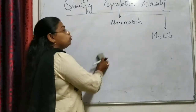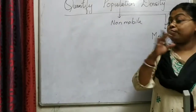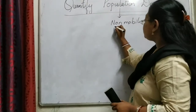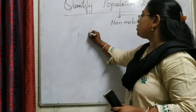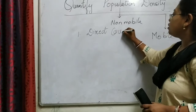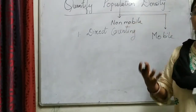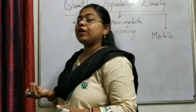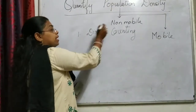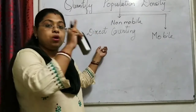Now if it is non-mobile, the first type of method to quantify is direct counting. If it is a very large-sized organism, such as a tree in a row, then it can be directly counted. So direct counting is the first method for non-mobile organisms.